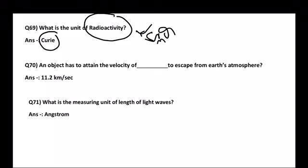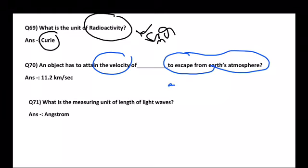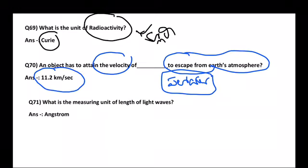Next: An object has to attain what velocity to escape from the atmosphere? This is called escape velocity. The answer is 11.2 kilometers per second. Any object needs this minimum velocity to cross the atmosphere and escape Earth's gravitational pull.